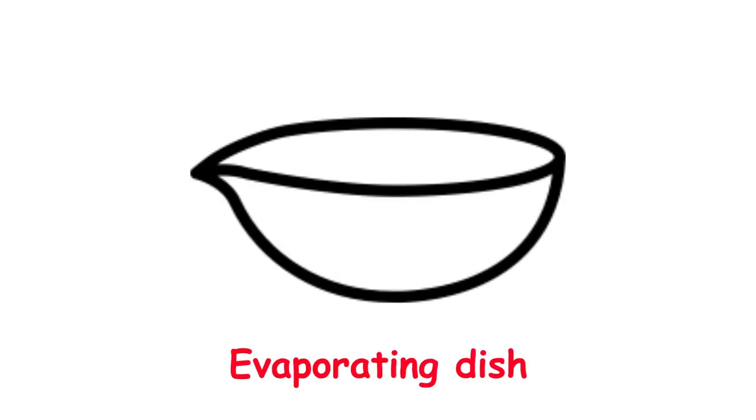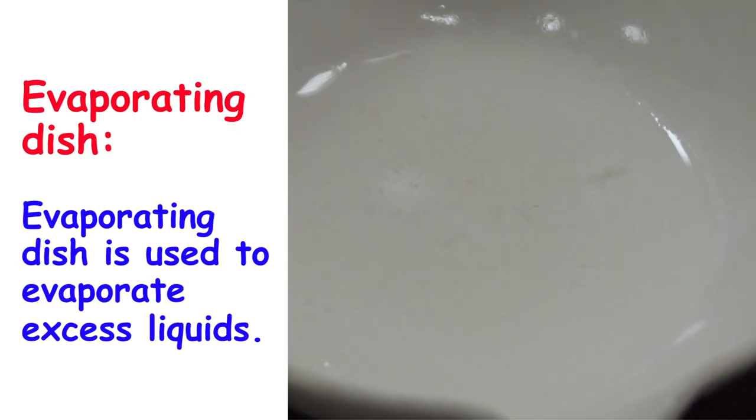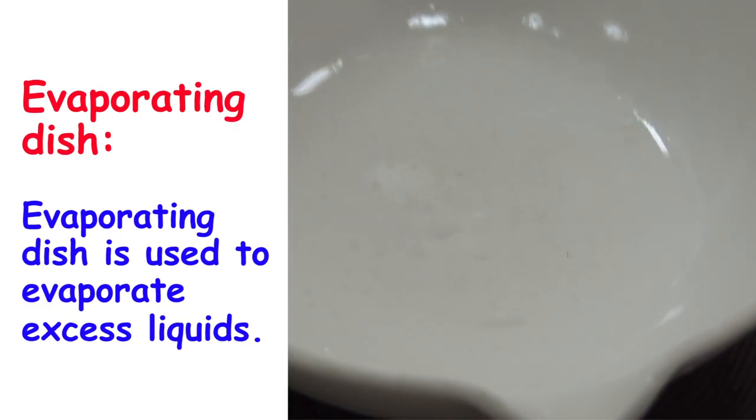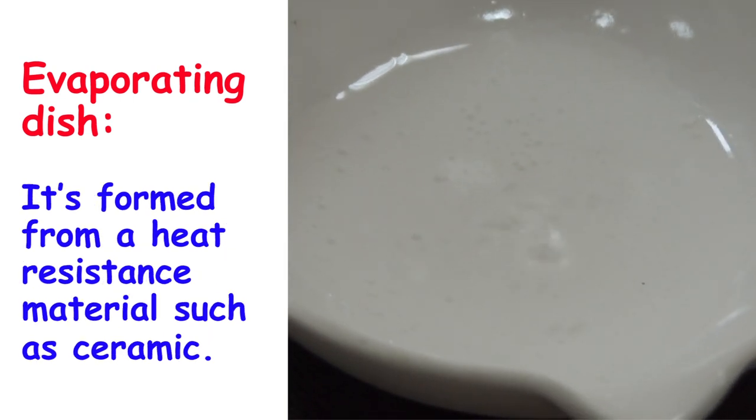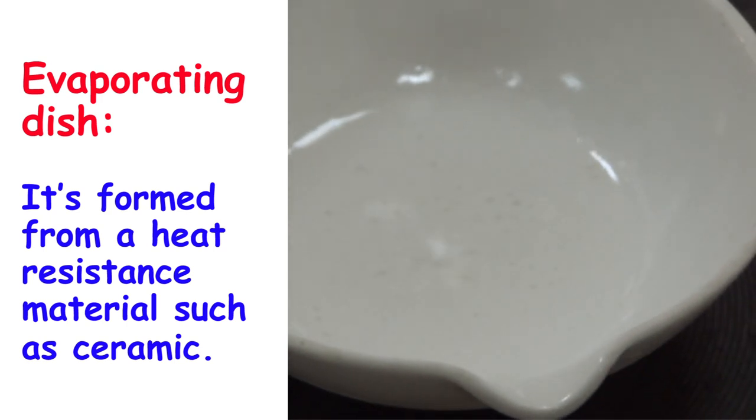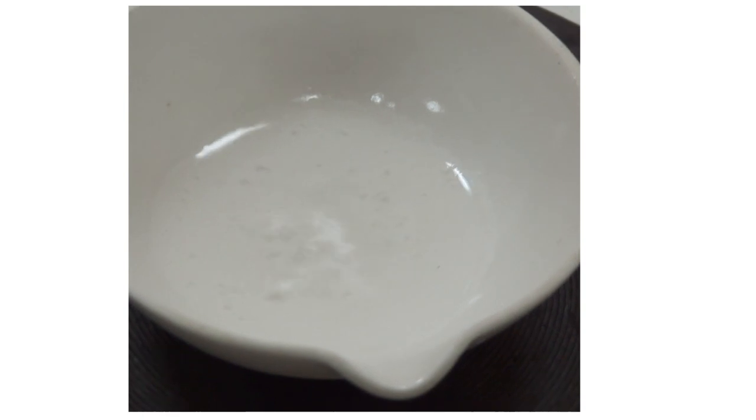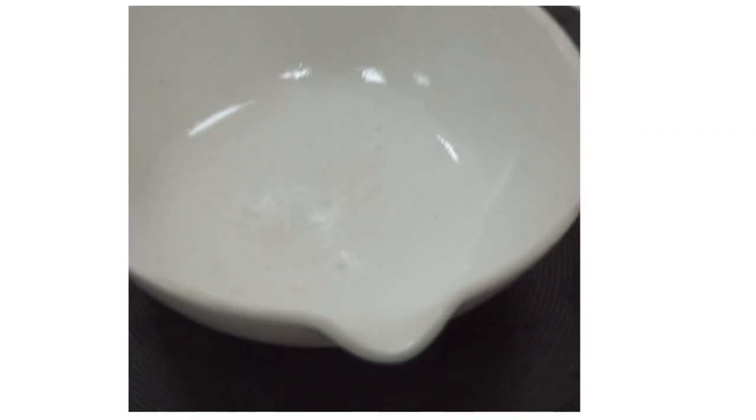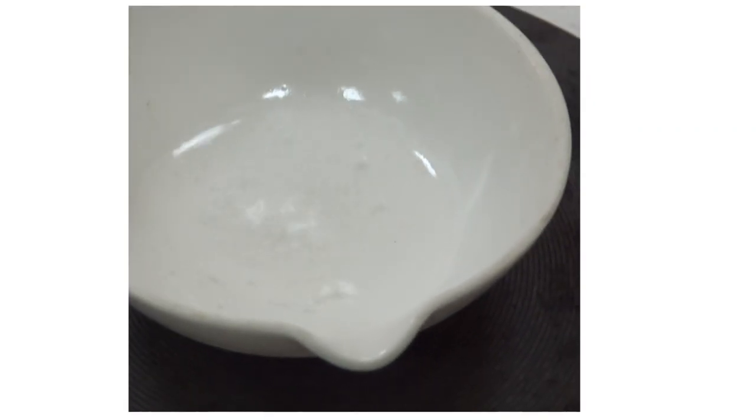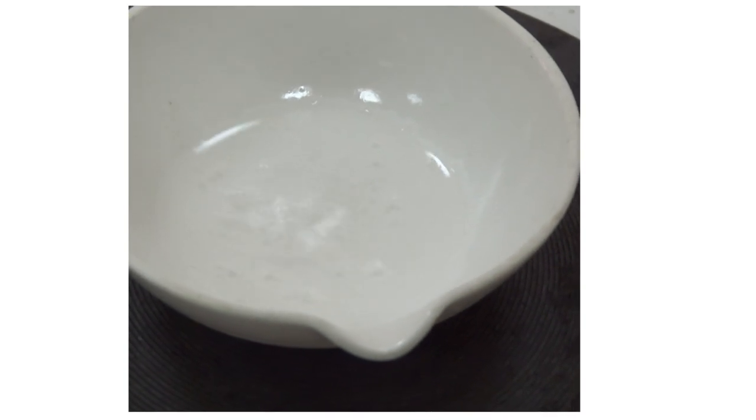An evaporating dish is used to evaporate excess liquids. It's formed from a heat-resistant material such as ceramic. Look how water evaporates in order to recuperate salt alone. Hot materials such as an evaporating dish can't be held by hand to avoid burning. Look how the scientist is removing the evaporating dish by using a pan formed from wood.